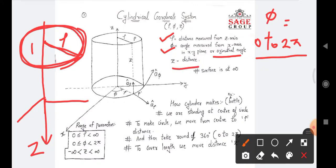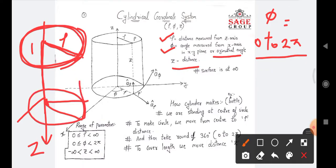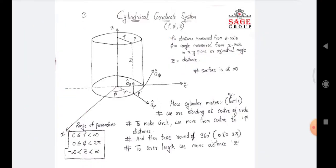What is z? Z is the distance we have traveled on the z-axis. We have made the upper circle. To cover the whole length, we come back to the center part and move to the center of the axis, then follow the same procedure, make the circle again, and in this way our cylinder is formed on the coordinate axis.